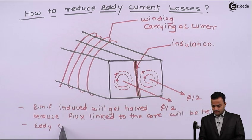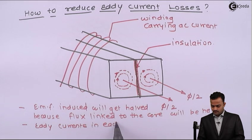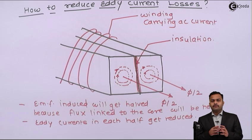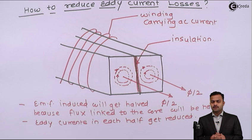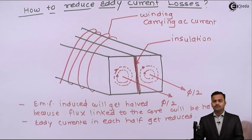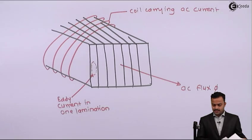What if this core is subdivided into several sections of very thin laminations? Then maybe we could remove this eddy current losses significantly. See how. So for that, the structure will be like this.